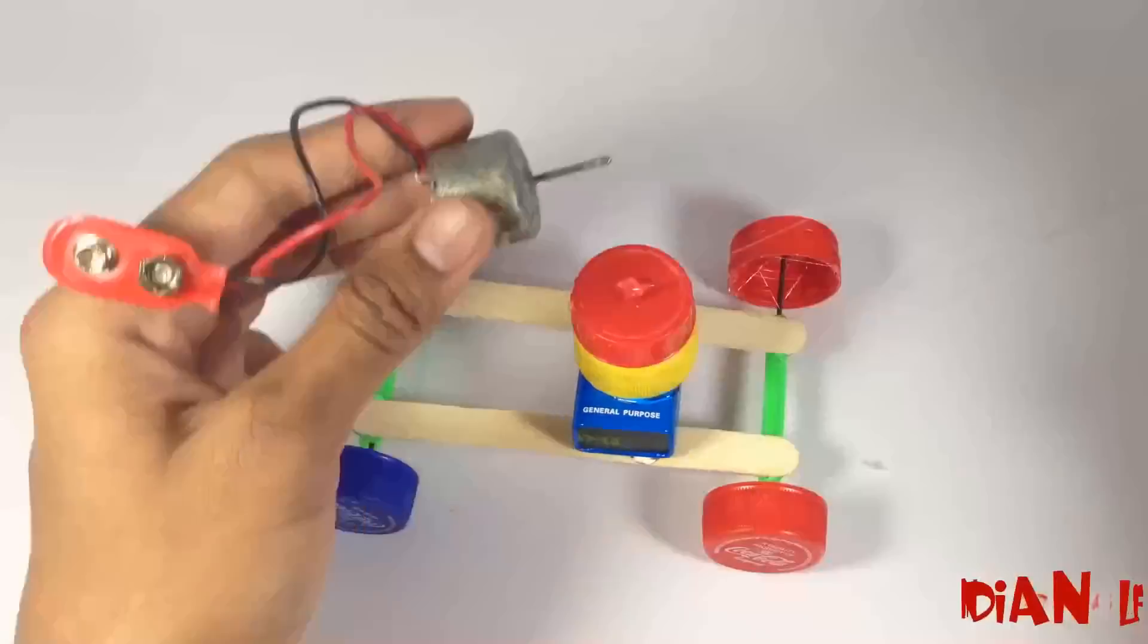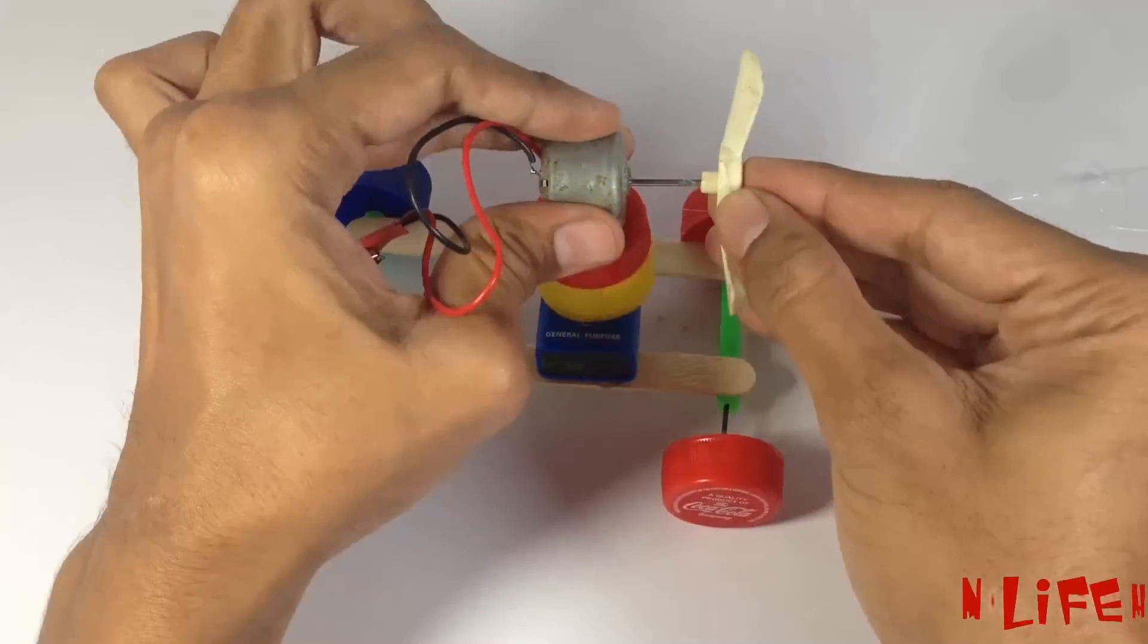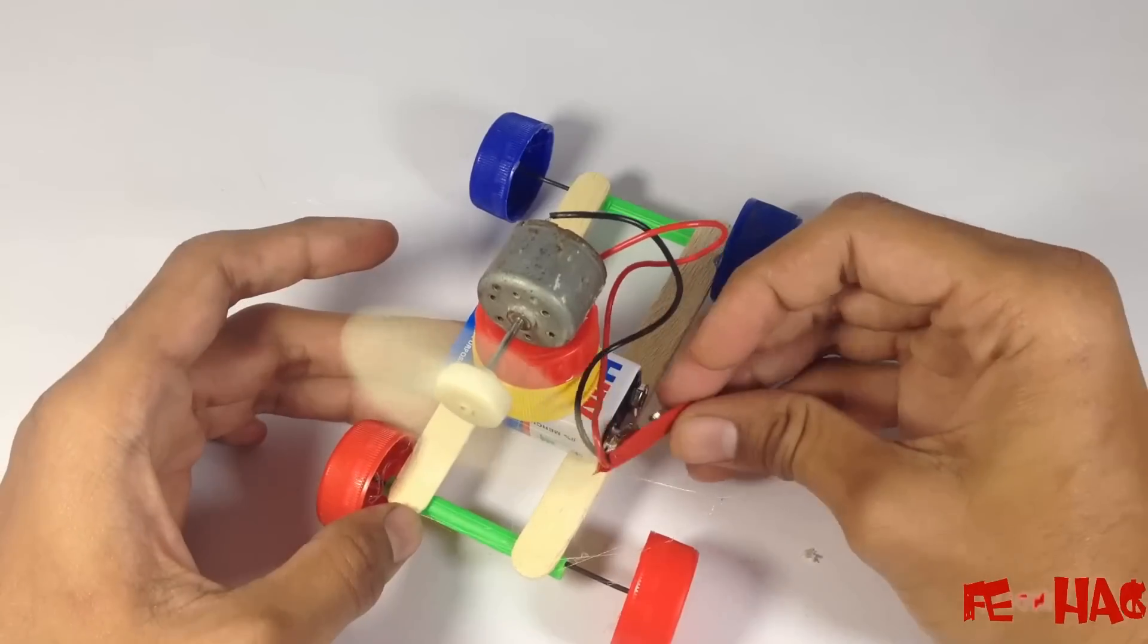Now fix the battery-powered motor on the top of the bottle cap. Now fix the wing for the propeller in it, and then connect it with the battery. Our car is ready.